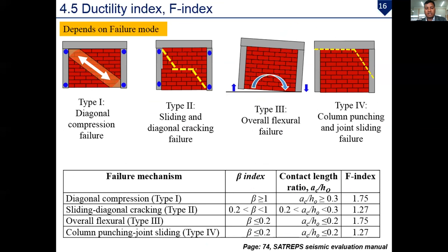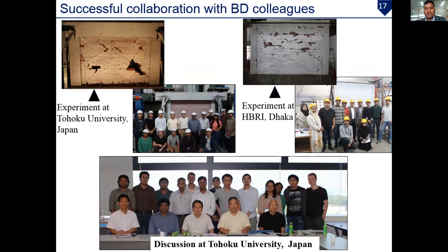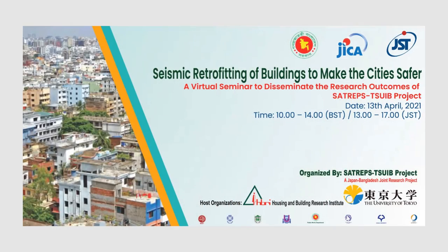This slide shows the relationship between beta index, contact length ratio, and ductility index. This chapter was proposed based on several experiments at Tohoku University and also at HBRI (Housing and Building Research Institute), along with discussions held at Tohoku University and in Dhaka. Thank you very much for your patience in listening.